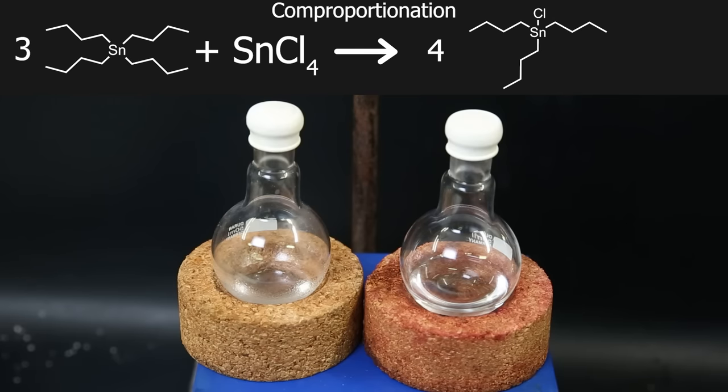In the reaction, the tin chloride and tetrabutyl tin will swap their chloride and butyl groups until they all become balanced. If the mixture contains ¼ tin chloride and ¾ tetrabutyl tin, it will all become tributyl tin chloride.